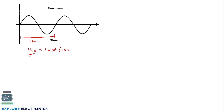Suppose if I take the sampling frequency FS the same as the 1 Hz signal, I am going to get one sample here, another sample here, and then another sample here. So the output will be 0, 0, 0 — making it difficult to reconstruct back this signal.